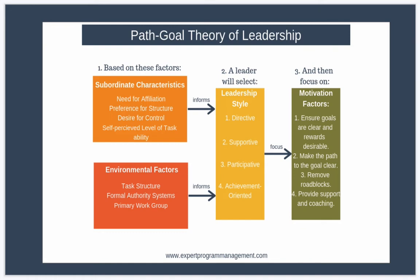Now so far this all sounds very much like expectancy theory. So what's the difference? Well, the difference is that path-goal theory states not only that leaders should focus on these motivational factors, but that they should use a specific leadership style based on the situation they find themselves in. And you can see this here in the diagram. A leader will select a leadership style dependent on these two combinations of factors: firstly subordinate characteristics, and then secondly the environmental factors.